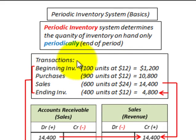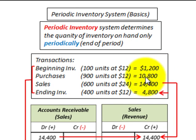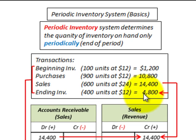We're going to have some transactions where we have a beginning inventory amount of $1,200, purchases for the period of $10,800, sales for the period of $14,400, and ending inventory of $4,800. With this periodic inventory method, that ending inventory figure is key.